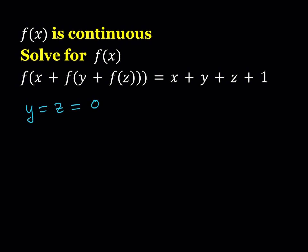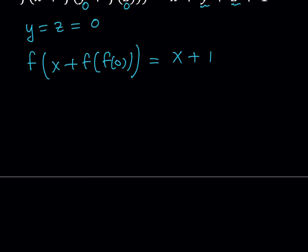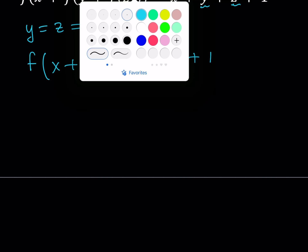Setting y equals z equals 0, let's see what that gives us. On the left hand side, f of y and f of z become f of 0, so we get f of x plus f of 0. On the right hand side, y and z are 0, so we end up with x plus 1. This gives us a really simple equation. If we replace f of 0 with something, we can get a very clean expression.